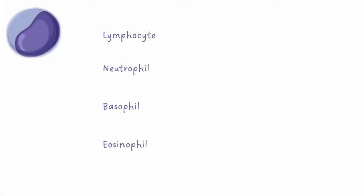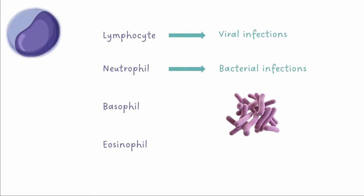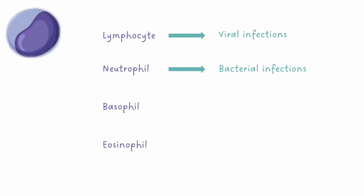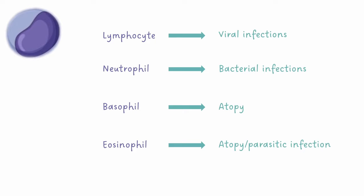The white cell differential is often overlooked, but can be useful for identifying more specific disease. Generally, raised lymphocytes can be associated with viral infections, and raised neutrophils with bacterial infections. Basophils and eosinophils can be raised in atopy — for example, asthma or allergies. Eosinophils are also specific for some parasitic infections, like helminths.